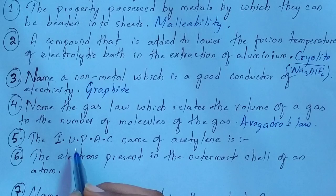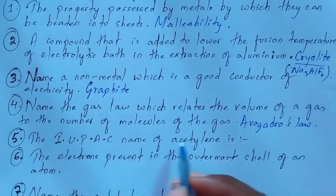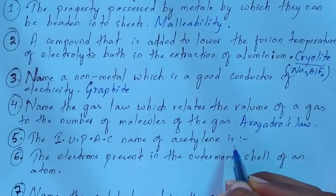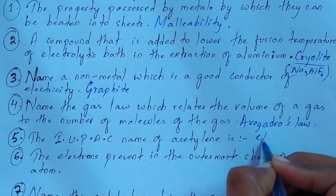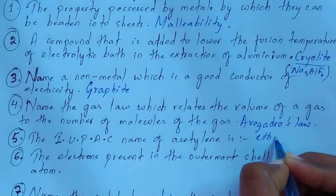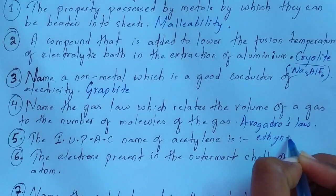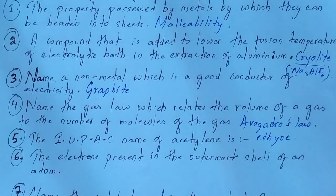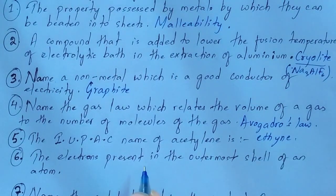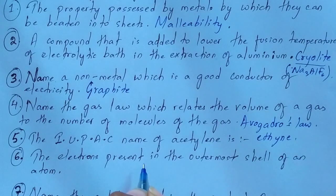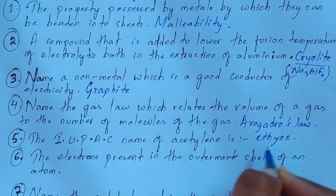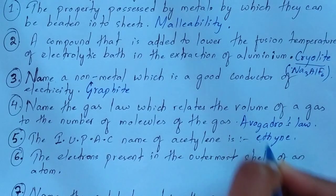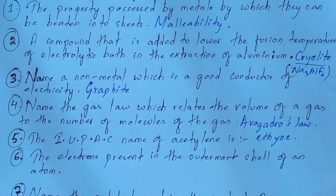Question number 5: name the IUPAC name of Acetylene. The IUPAC name of Acetylene is Ethine. I have discussed this in one of my previous videos as well. The IUPAC name of Acetylene is Ethine — this is also important.